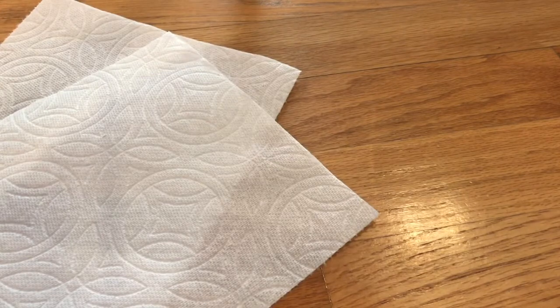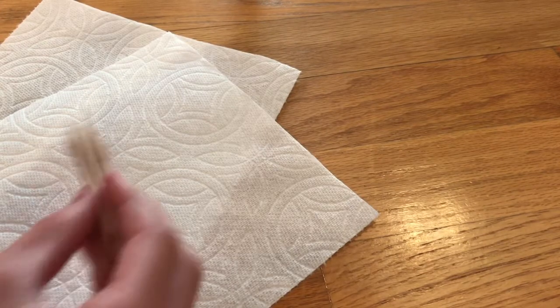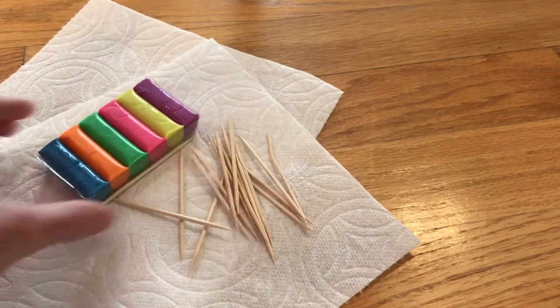In the second activity, toothpick sculptures, you will learn about 3D shapes by constructing your own structures. You will need paper towels, two per group, toothpicks, and either marshmallows, diced apples, grapes, or play-doh as connectors. First, get into groups of two to three.